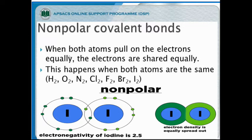Non-polar covalent bonds form when both atoms pull on the electrons equally and the electrons are shared equally. This happens when both atoms are the same element. For example, diatomic molecules like H₂, N₂, Cl₂, F₂, Br₂, and I₂ are always non-polar because the shared electrons are equally shared, and both atoms attract equally. Equal electron density is equally spread out.